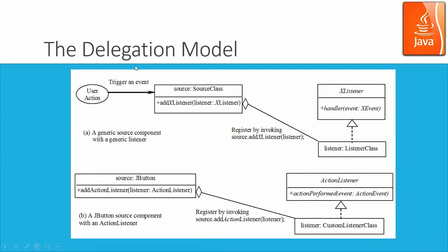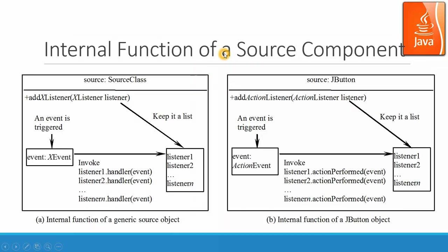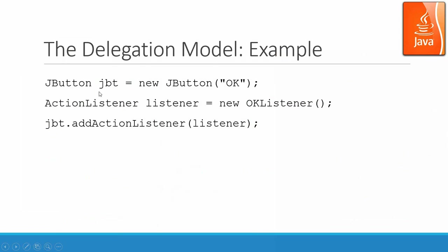Here is how the event delegation model works internally. An event triggers and is put into the event queue. When dequeued by the virtual machine, it is sent to a certain listener. The listener is selected based on the event source. One simple delegation model example: you create a button with a title, create a listener with new OkListener, and then associate the listener with the button.